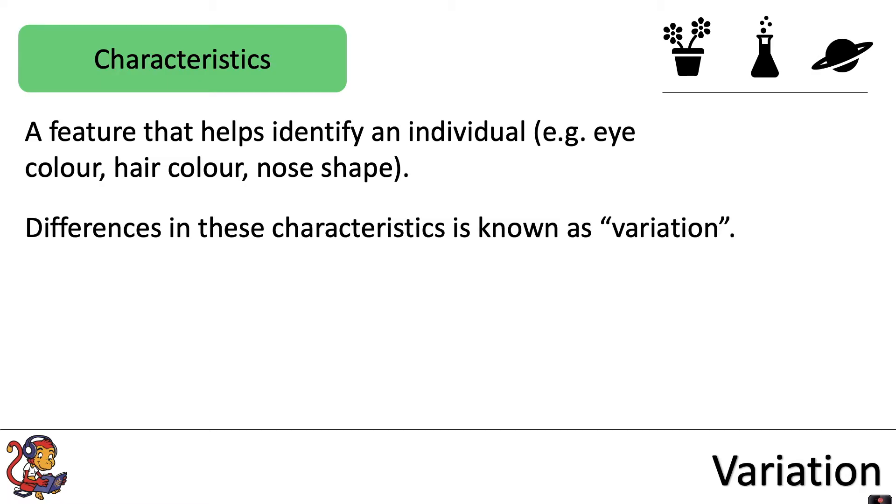Differences in these characteristics is known as variation. So you can think of variation as everybody, or in the case of animals or plants, every organism being a little bit different.